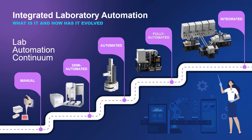This brief history of integration highlights that integration is nothing new, but what is important is to realize that much of the technology and the way of architecting systems that originated many years ago still exists today. We are still building automation platforms with robots on rails, and if you walk through any lab today you're still going to see devices that use serial communication. So what is the best way to go about this?